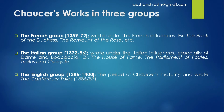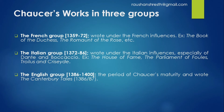The French group includes works with French influences, such as The Book of the Duchess and The Romance of the Rose. The Italian group covers the period of around 1372 to 1386, during which Chaucer was influenced by Italian literature. The major works of this Italian period include The House of Fame, The Parliament of Fowls, and Troilus and Criseyde.